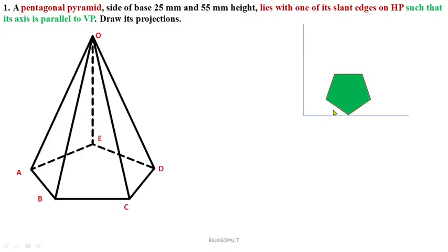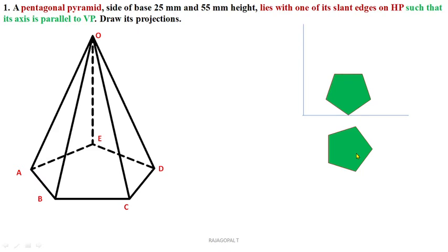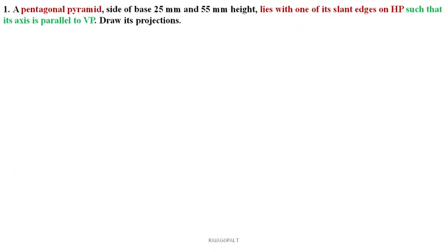This is the position of the pentagon plane surface. After a rotation of 90 degrees, it is the final position of the top view. After rotation of 90 degrees in the clockwise direction, this corner may shift to the left side. Always use the conditions correctly — if the slant edge is on HP, one corner of the base pentagon should touch the XY line. We can keep the corner on the right side for a better position in step 3, which is more convenient.